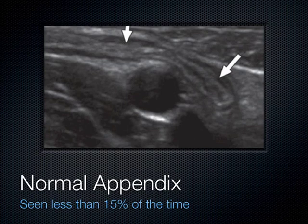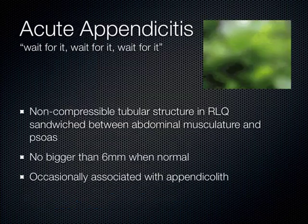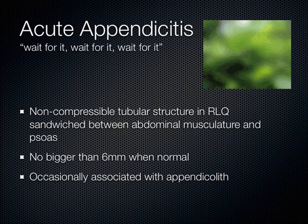This is an 18-year-old woman with lower abdominal pain. We can see a blind-ended tubular structure with thin walls — less than 5 millimeters — right adjacent to her external iliac artery. When looking for the appendix, compress the abdominal wall musculature down to the psoas muscle. With repeated compression, that little appendix will pop into view. It gets sandwiched between the abdominal wall musculature and the psoas. A normal appendix should be no bigger than 6 millimeters.